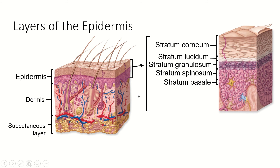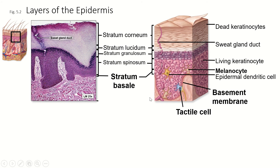We're going to start at the bottom. Just to orient you, this is our whole integumentary system. This is the epidermis here, and it ends in this wavy layer. This is a diagram focusing on the layers of the epidermis. We're going to learn all these different layers and then talk about the dermis and the subcutaneous layer. We'll start here at the bottom with the stratum basale.